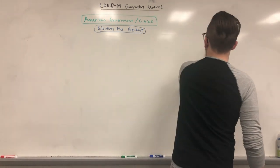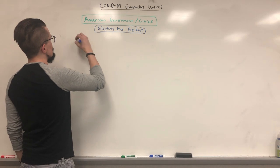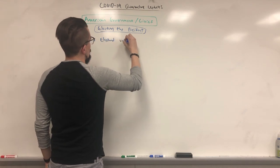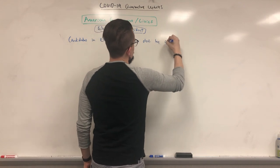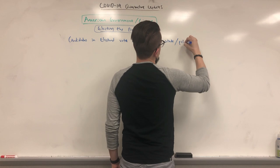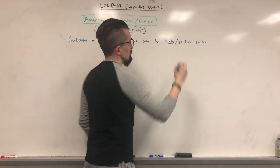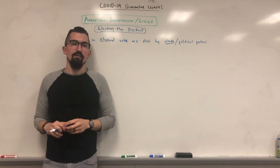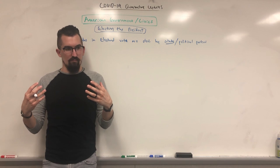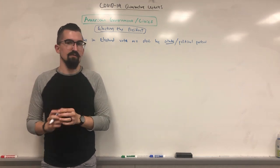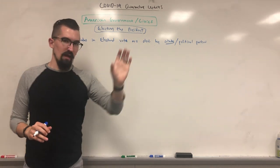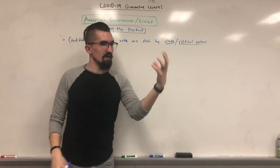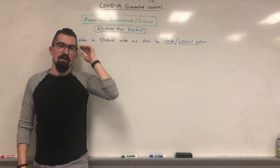So how do we get to the electoral college? The candidates in the electoral vote are determined first by state policies and then by political parties. It's actually the duty of states and local governments to organize these elections, but the political parties are the ones that field the candidates, inform voters about them, and organize the actual selection process so that their most popular candidate gets on the ballot.